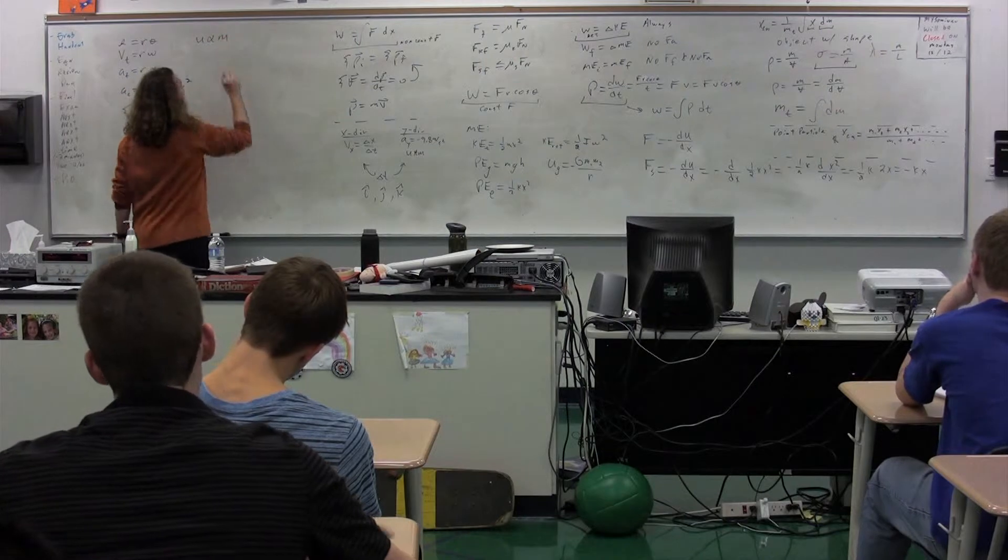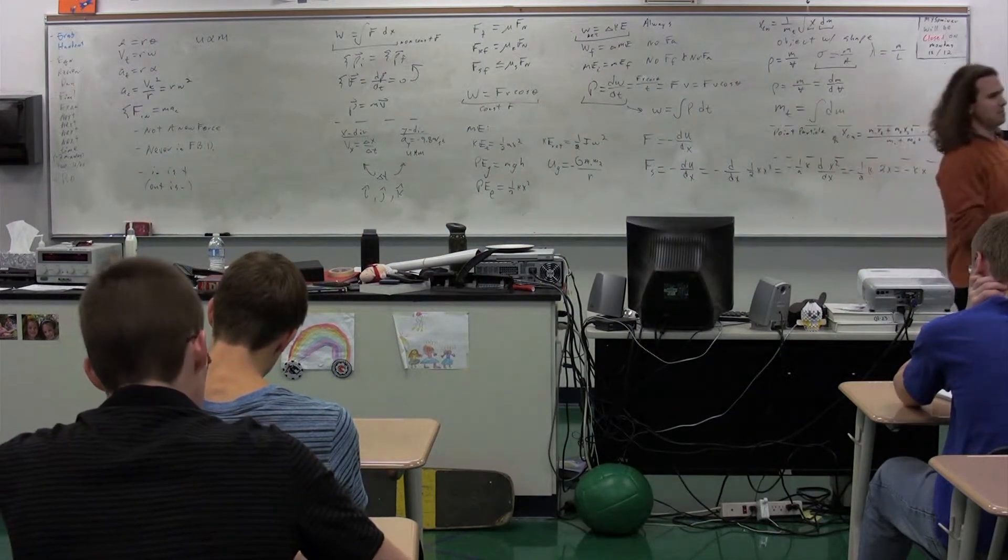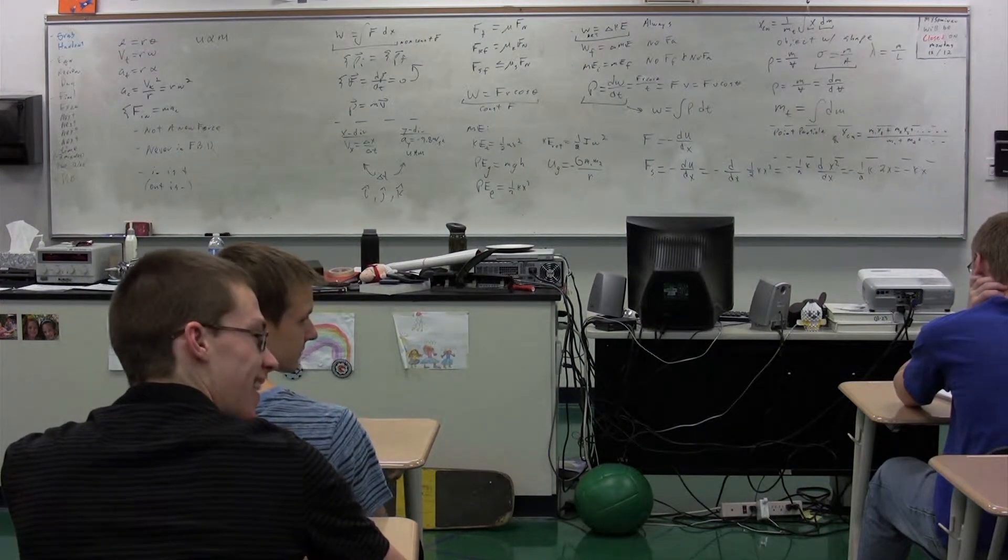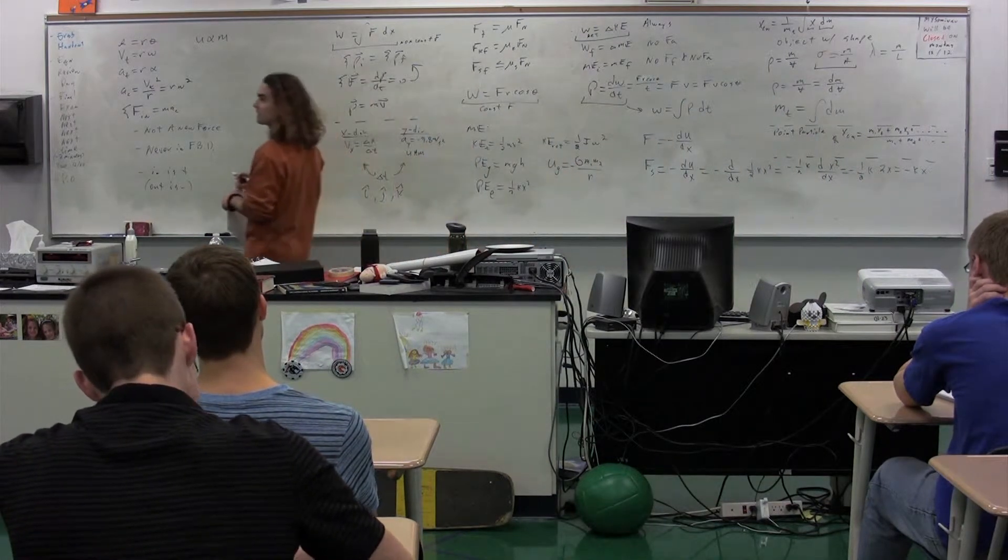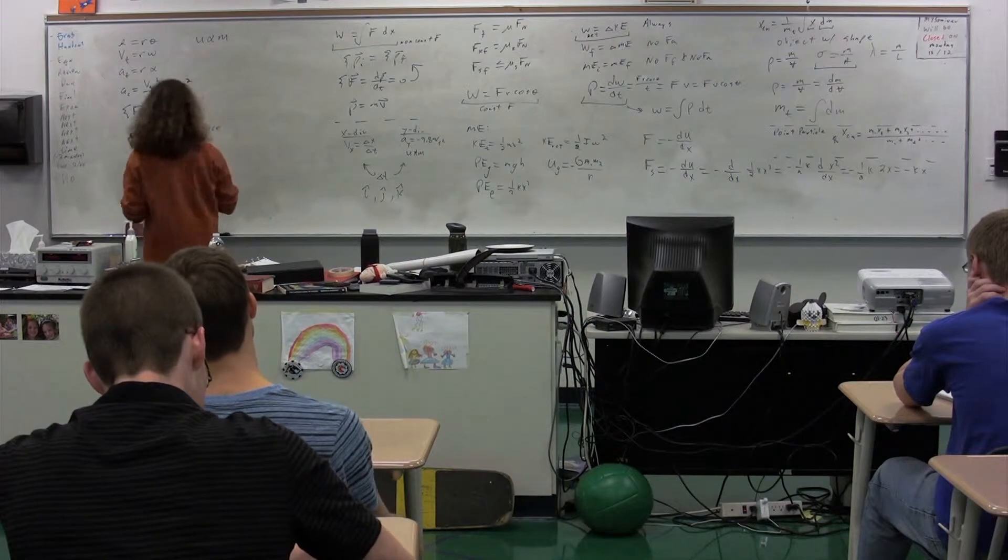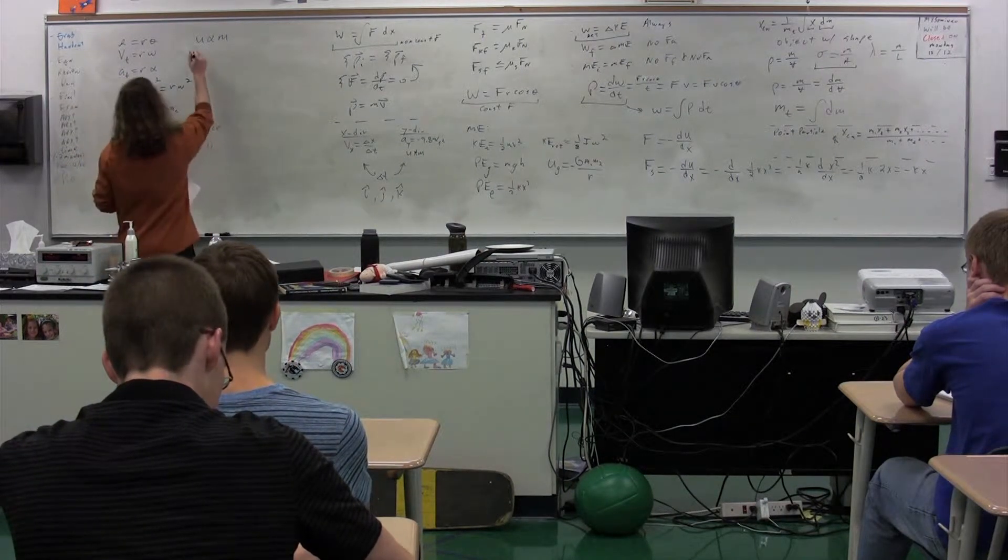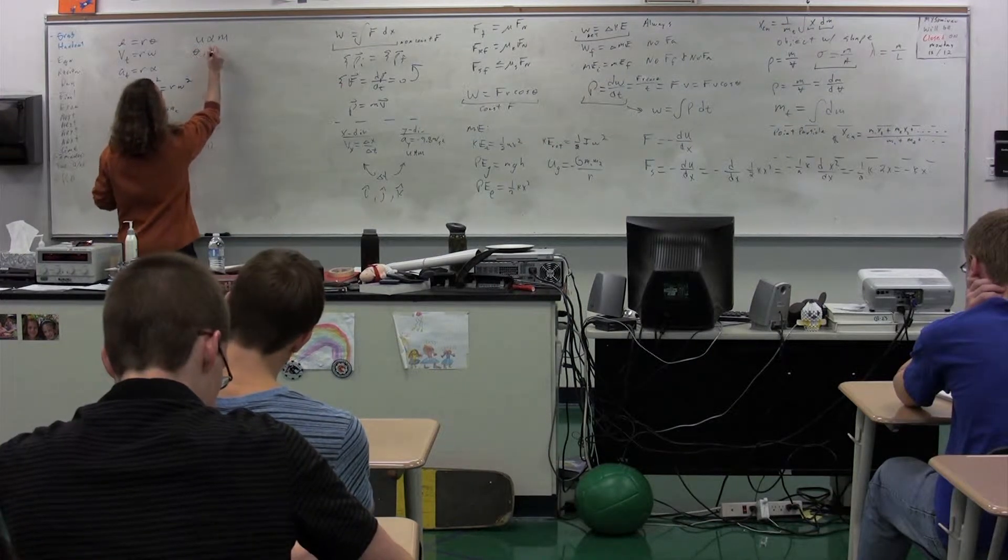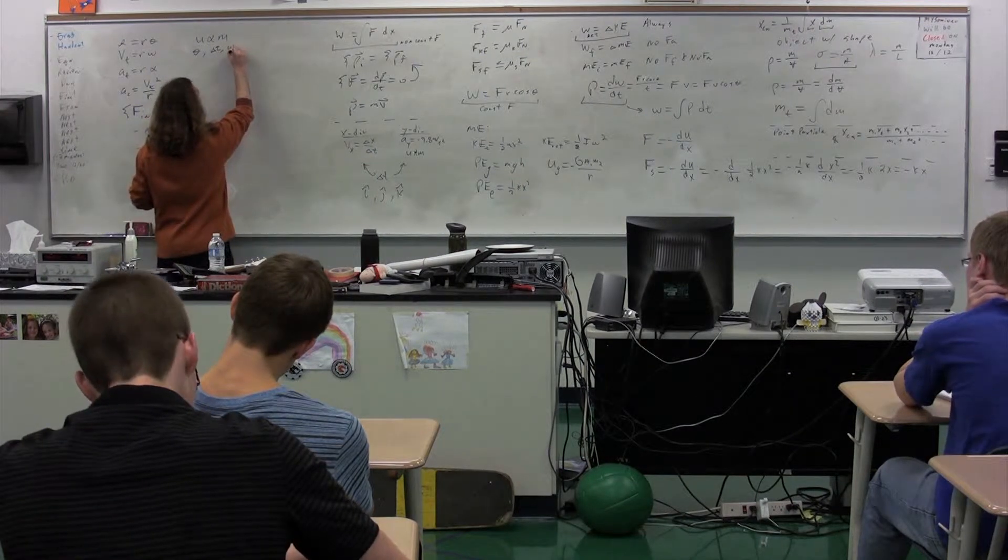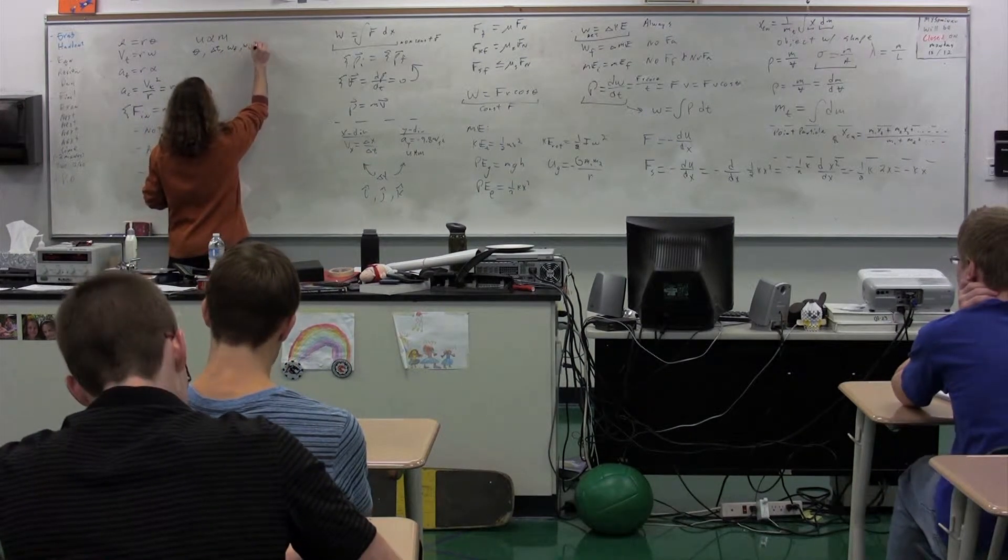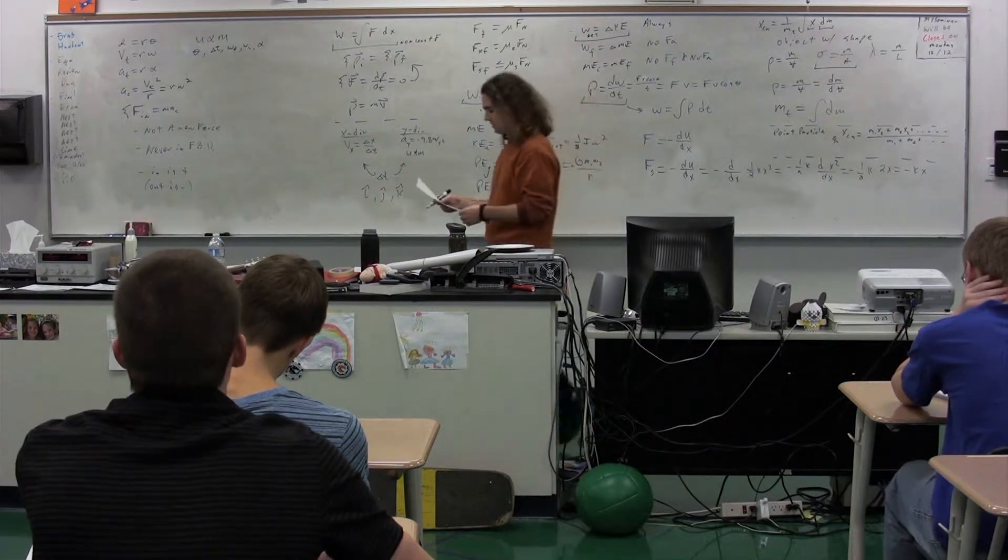UΦAM. Please give me the full title of UΦAM. Jenkins. Uniformly angularly accelerated motion. UΦAM is much easier to say than uniformly angularly accelerated motion. What are the five UΦAM variables? Theta, delta T, omega final, omega initial, and alpha. UΦAM works just like UAM. They even give you the equation, which is like cheating.